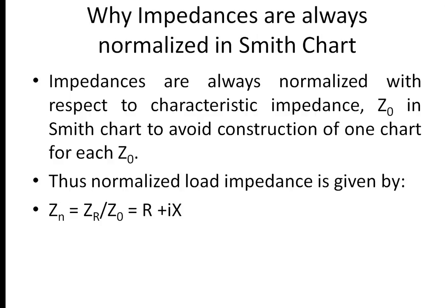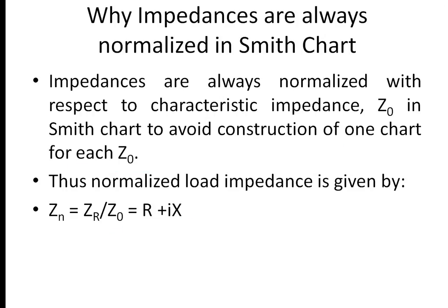Why are impedances always normalized in Smith chart? Impedances are always normalized with respect to characteristic impedance Z naught in Smith chart to avoid the construction of one chart for each Z naught. Therefore, normalized load impedance is given by Zn equals Zr by Z naught, equals R plus iota X. I have already explained these terms — Zn, Zr, Z naught, R and X — in my previous slides.